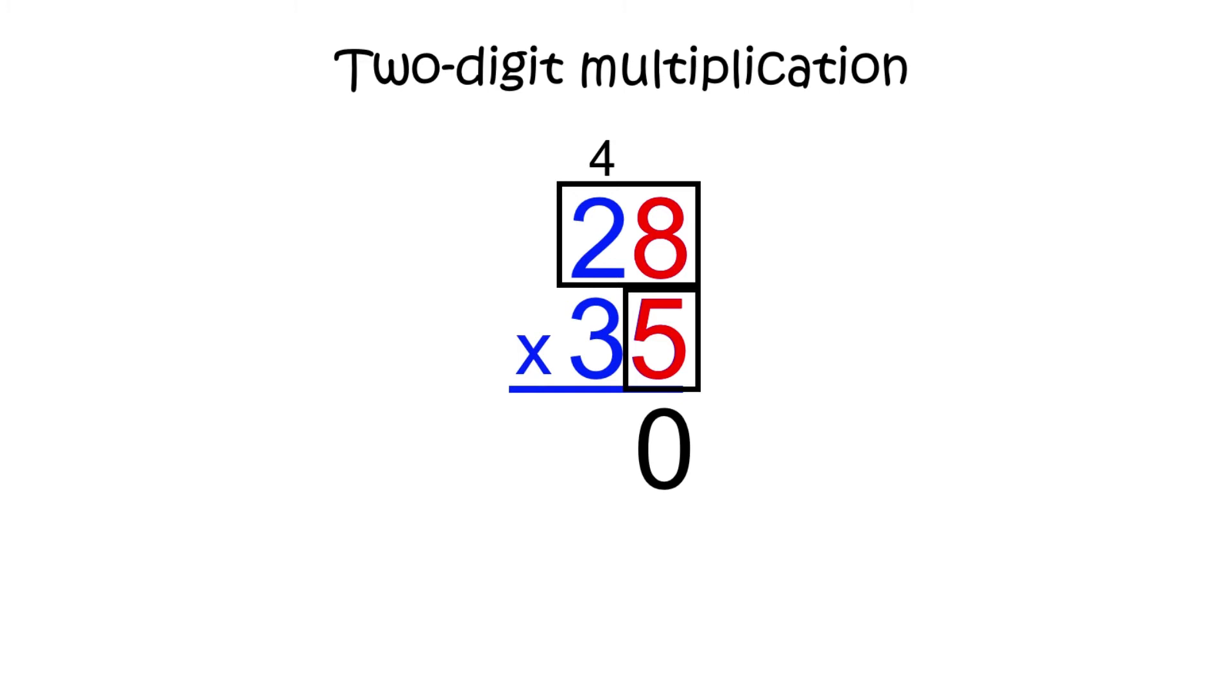Finish multiplying the top row by the 5, focusing now on the tens place in 28. 2 multiplied by 5 is 10, but we also need to add on the amount that we carried. Since we carried a 4, let's add 4 to our 10 and write the answer below the problem. We have just multiplied 28 by 5 and see that equals 140.